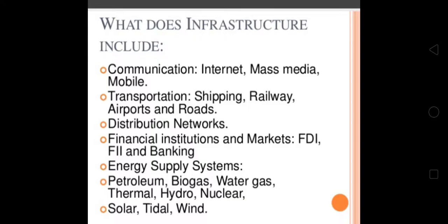Fifth is energy supply systems, which include petroleum, biogas, water, thermal, hydro, nuclear, solar, tidal, and wind. However, in Class 12 according to the syllabus 2021, energy in infrastructure is not included. That means we have to discuss only four components: communication, transport, distribution, financial institutions, and health.